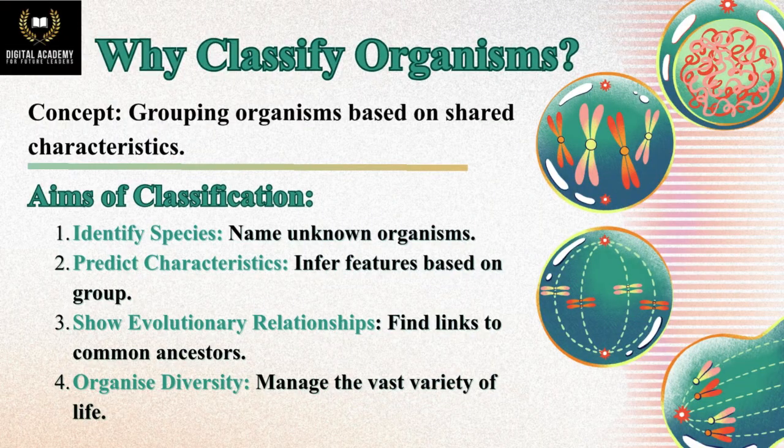Why classify organisms? Concept: grouping organisms based on shared characteristics. Aims of classification: identify species and name unknown organisms; predict characteristics and infer features based on group; show evolutionary relationships and find links to common ancestors; organise diversity and manage the vast variety of life.